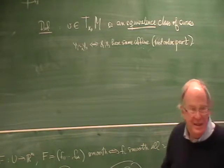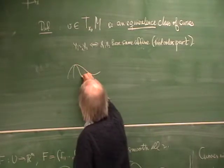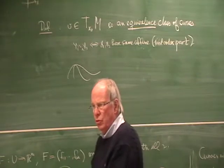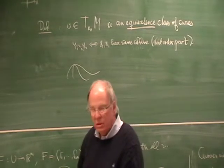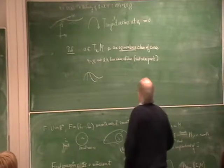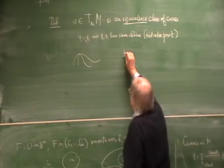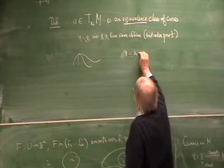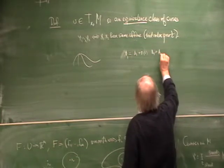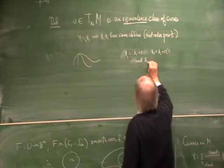That means they are tangent — two curves are equivalent if they're tangent. This curve and this curve are the same because they are tangent. Tangent to order 1 just means they have the same first-order part. That means γ₁ = A₁ + o(1) and γ₂ = A₂ + o(1) where the affine parts are equal: A₁ = A₂. This can be defined in coordinates.